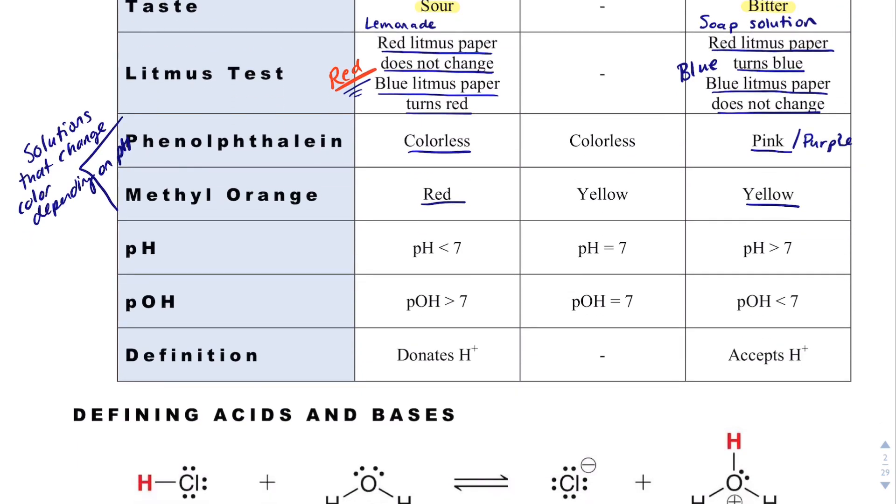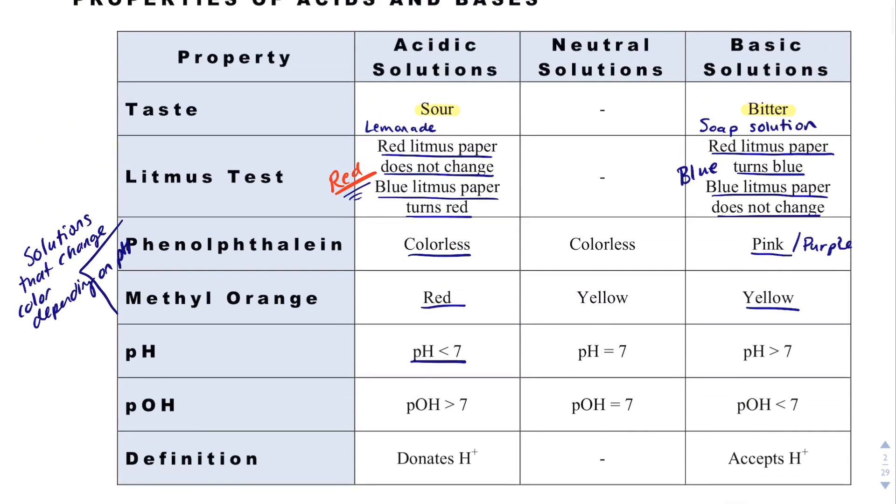Many people know that the pH is less than 7 for an acidic solution. The pH is going to be equal to 7 for a neutral solution, and then the pH is greater than 7 for a basic solution.